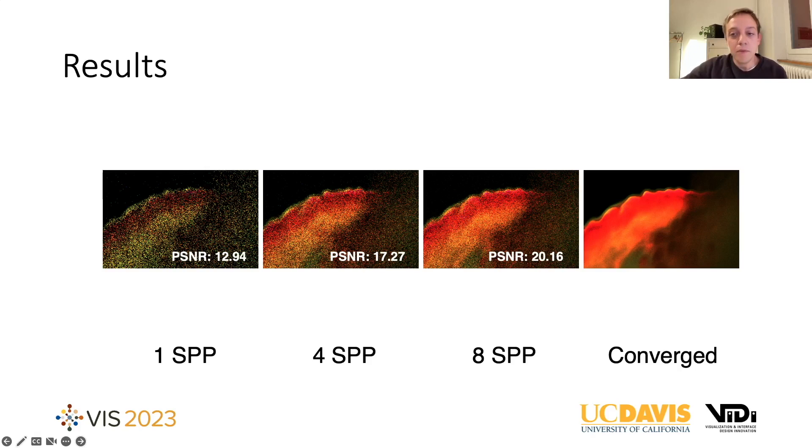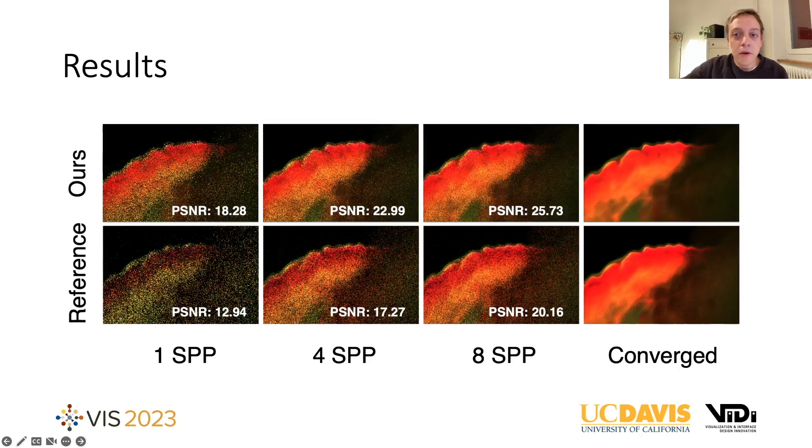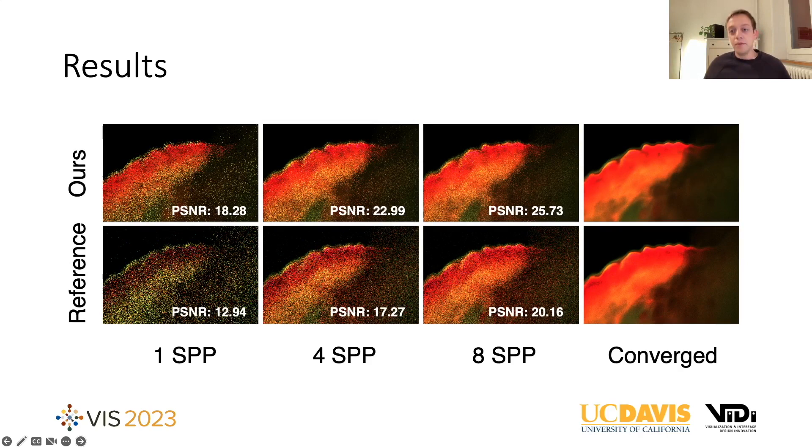Now here are the same shots rendered with the hybrid method using the photon fields. Immediately we get less noise. And if you look at the numbers, we do even better than using respectively double or even quadruple the amount of samples. This effect obviously is the most prevalent in regions that receive almost no direct light and are heavily lit by indirect light contribution.